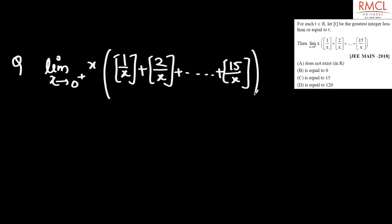Greatest integer can be written as 1 upon x minus the fractional part of 1 upon x. Similarly, we can write the second term as 2 upon x minus the fractional part of 2 upon x. All terms can be written this way. Multiply by x and apply the limit x tending to 0 plus.